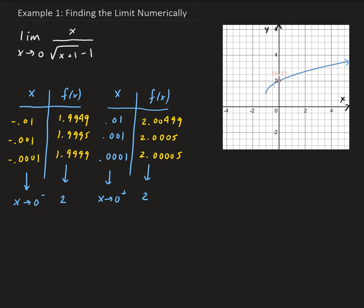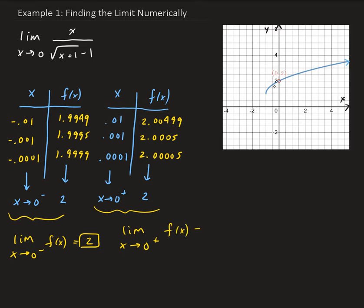So the limit as x approaches 0 from the left of our function gives us 2, and the limit as x approaches 0 from the right side also gives us 2. Therefore, the overall limit of our function as x approaches 0 is going to be 2. The right-hand limit and the left-hand limit approach the same y value.